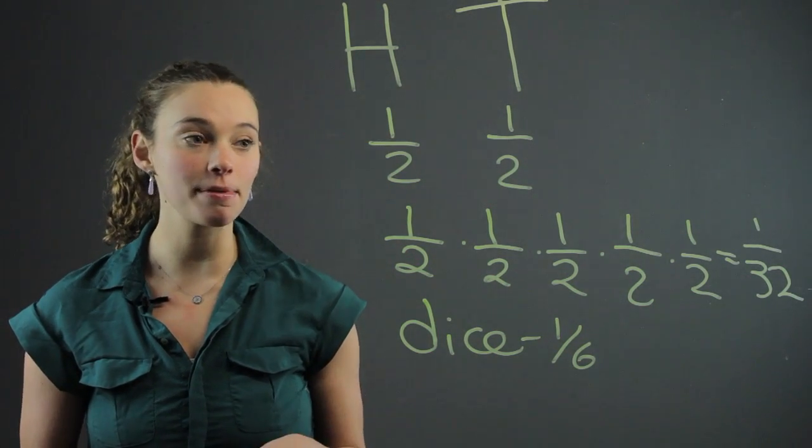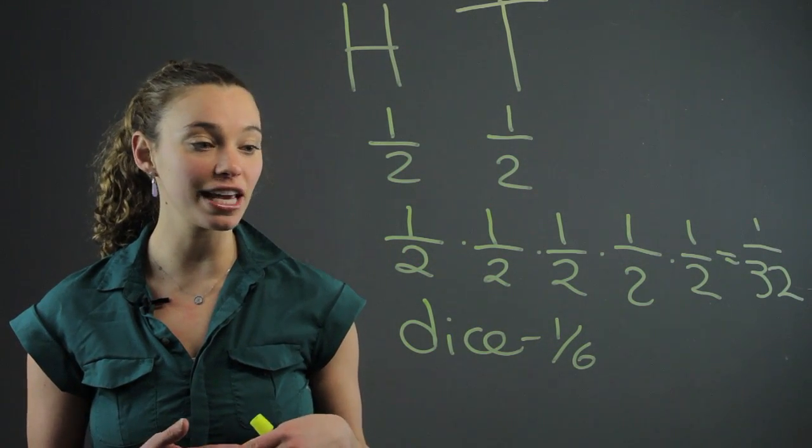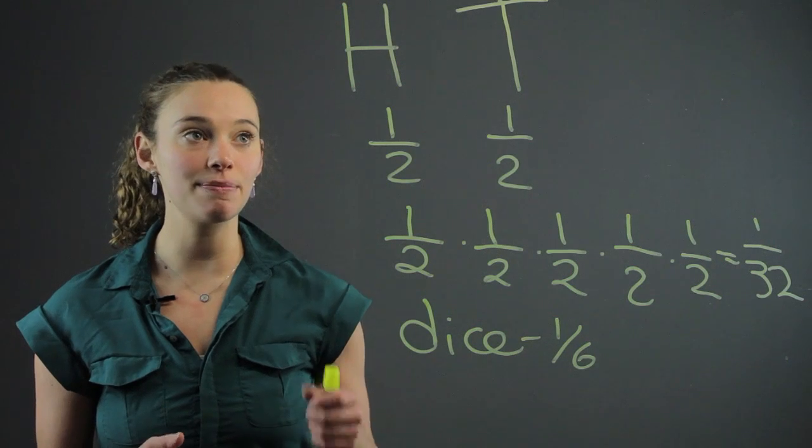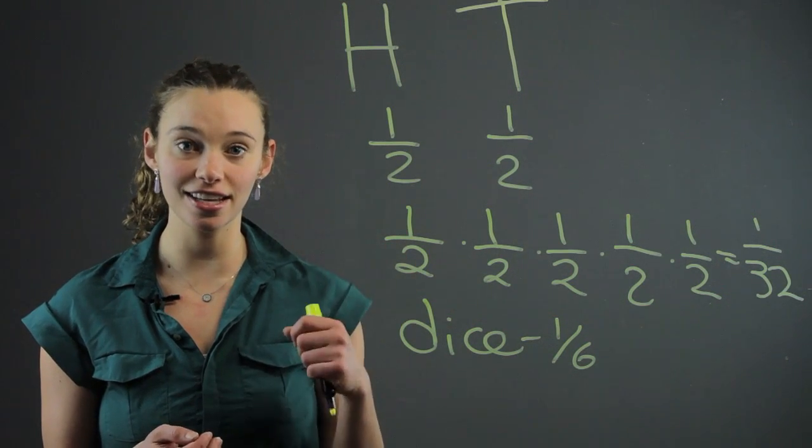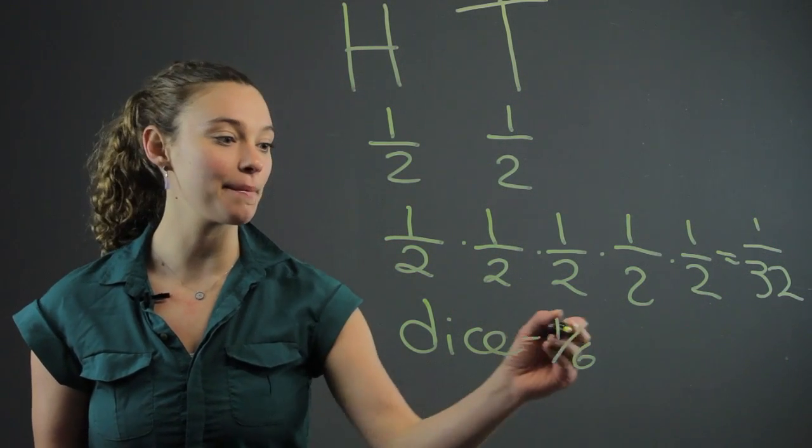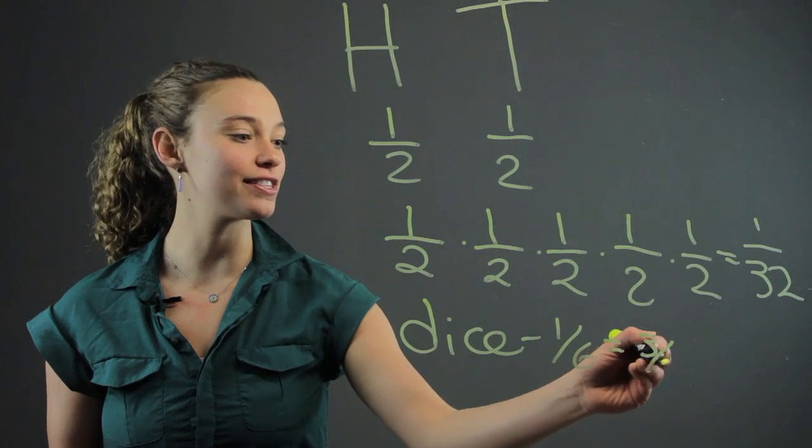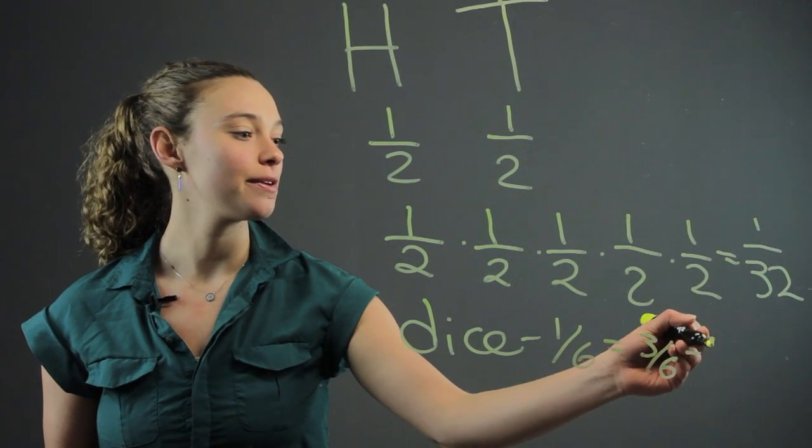Then you could ask a problem like, what is the probability of rolling an even number? Well, that's going to be two, four and six on the dice, which are three numbers. So that would be three out of six, which would be one half.